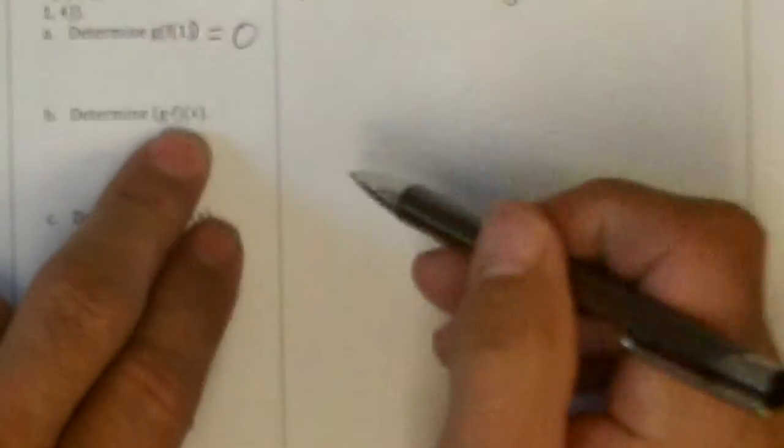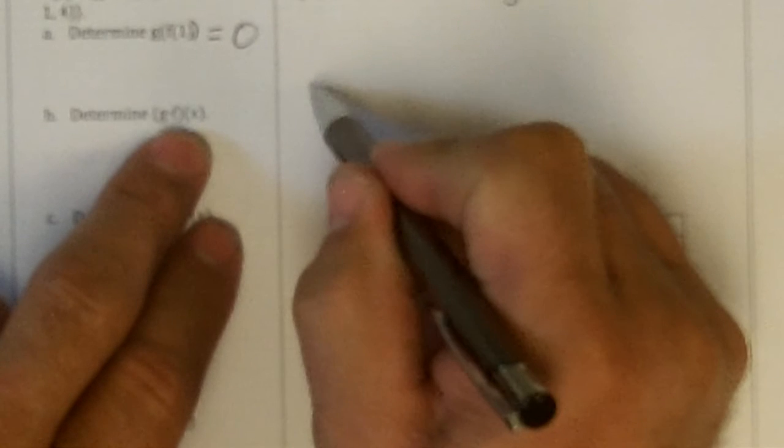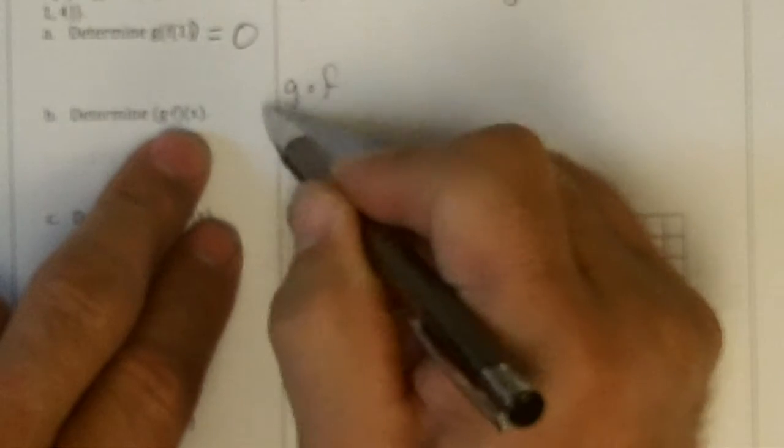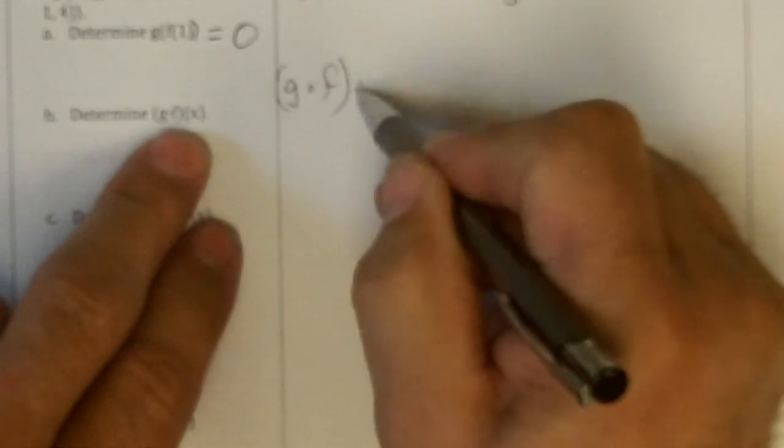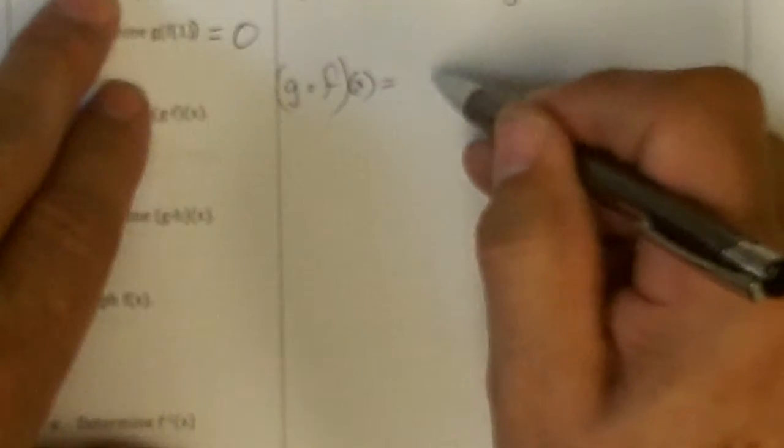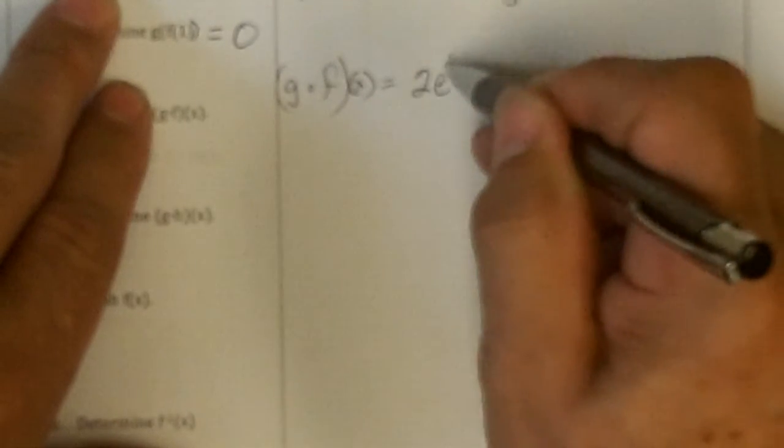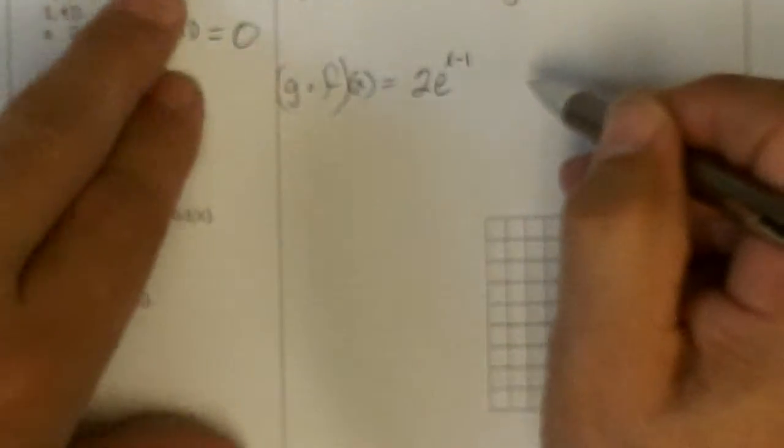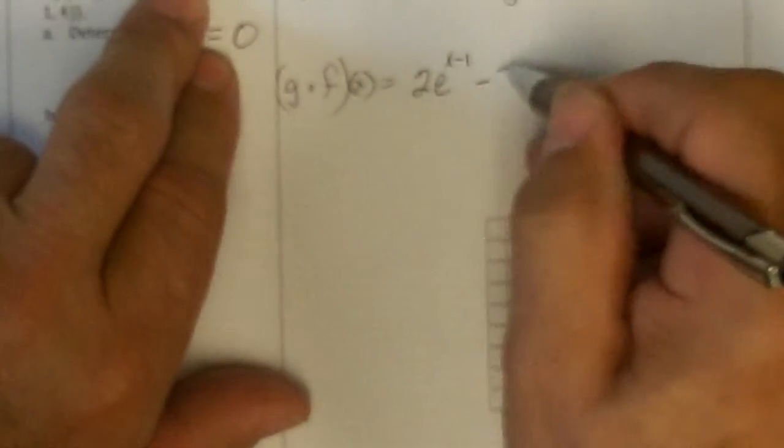Now I'm supposed to put f of x into g, so I got to put this in for the x. So I'm going to get g composite f—that's an open circle—of x is going to be f of x put in for the x's of g. So that's going to be 2 e to the x minus 1 in place of that x, and then minus 2.